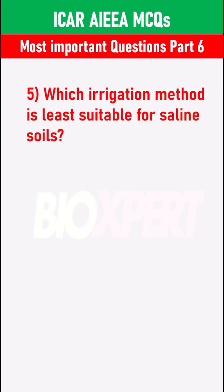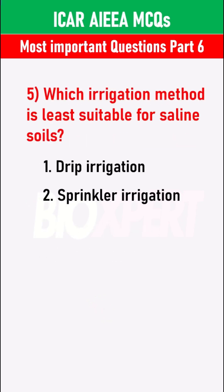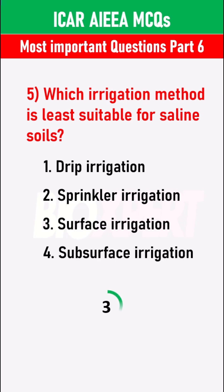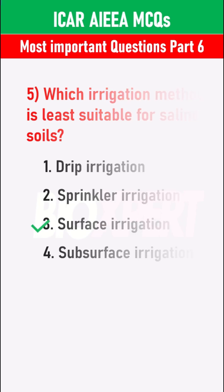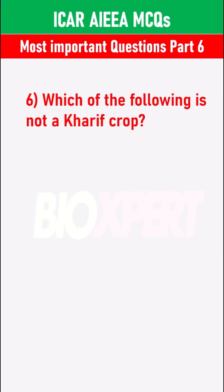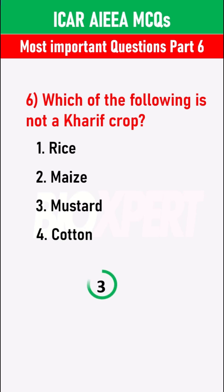Which irrigation method is least suitable for saline soils? Surface irrigation. Which of the following is not a cereal crop? Mustard.